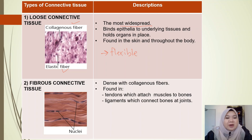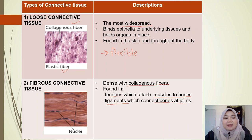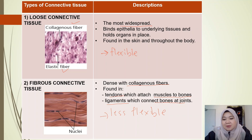The next one is fibrous connective tissue. Fibrous connective tissue is dense with collagenous fibers. You can find it in tendons, which attach muscles to bones, and also in ligaments, which connect bones at joints. Compared to loose connective tissue, fibrous connective tissue is less flexible.